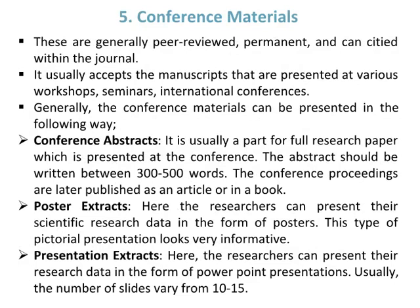Number five type of research article is Conference materials. These are generally peer-reviewed, permanent, and considered within the journal. They usually accept manuscripts presented at workshops, seminars, and international conferences. Conference materials can be presented in the following ways: Conference abstracts, which are part of a full research paper presented at the conference and written between 300 to 500 words; Conference proceedings, which are later published as an article or in a book; Poster extracts, where researchers present scientific data in the form of posters; and Presentation extracts, where researchers present data via PowerPoint presentations.